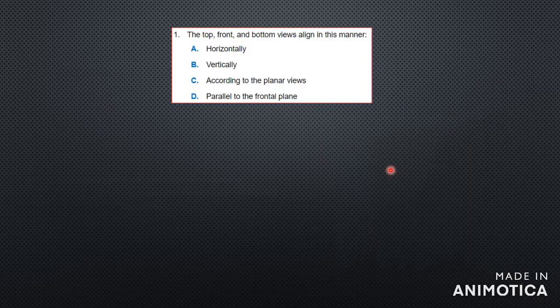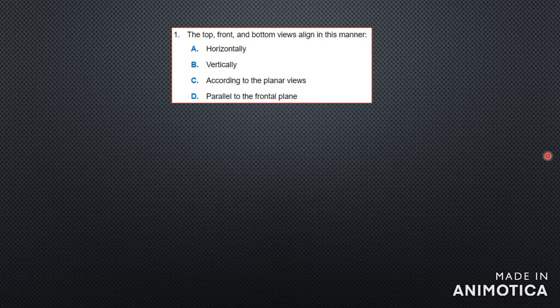The first question asks: the top, front, and bottom views align in this manner — is it horizontally, vertically, according to the plane of views, or parallel to the frontal plane? Horizontal means going left to right across the screen; vertical means up and down; according to the plane of views refers to the surface of the object.